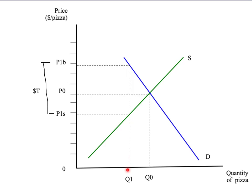The amount of money the government raises from the tax is given by the size of the tax, T dollars — the height of the rectangle — that's the tax per unit times the number of units, Q1, sold. That red rectangle represents the tax revenue the government raises. We can break that into two parts: the top area, area A, and the bottom area, area B.